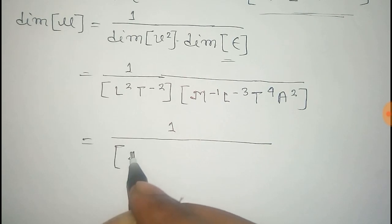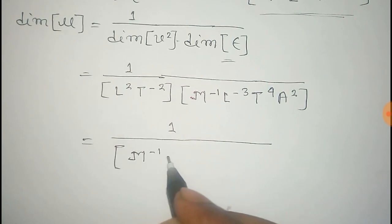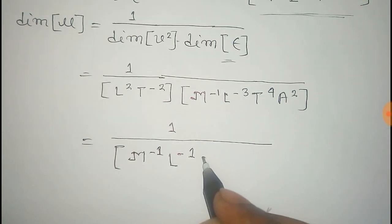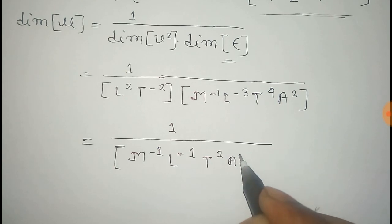So, after simplification, it will be like M to the power minus 1, L to the power minus 1, T to the power 2, A to the power 2.